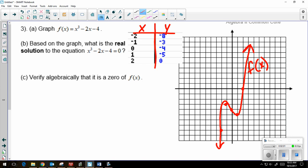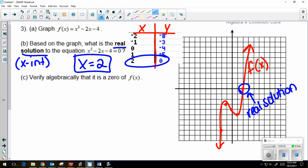So if I look at part b, it says based on the graph, what is the real solution to the equation x cubed minus 2x minus 4 equals 0. So if it's a real solution, that means it's an x-intercept. Now, an x-intercept can be seen from the graph right here, or I can look at my table for when y is 0. So my answer is going to be x equals 2.